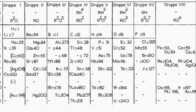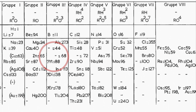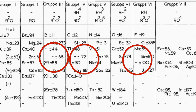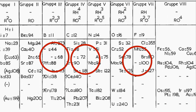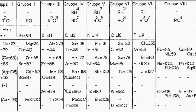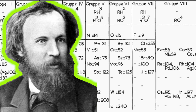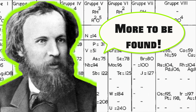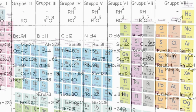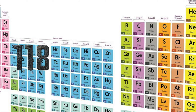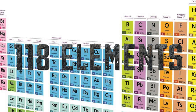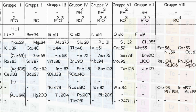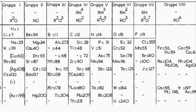Did you notice the blank spaces in Mendeleev's table? They are empty spaces that Mendeleev left for elements that had not yet been discovered. Mendeleev predicted that these missing elements would eventually be discovered — and he was right. Today, the periodic table has 118 elements. Based on their position in the table, he even predicted their properties.